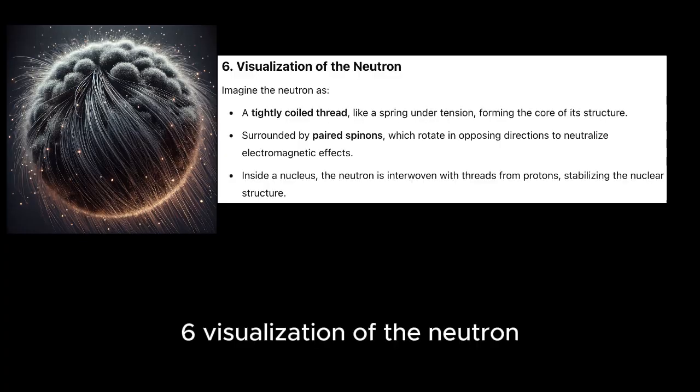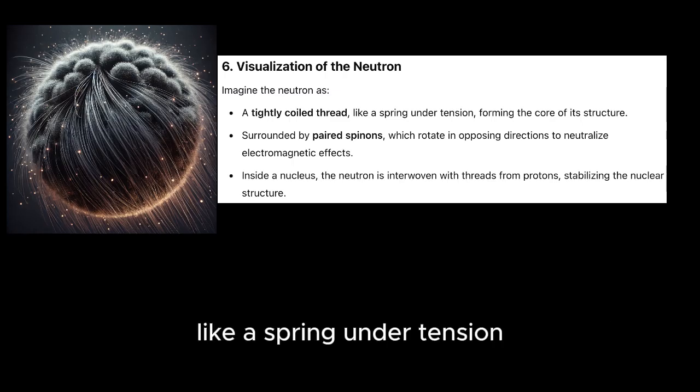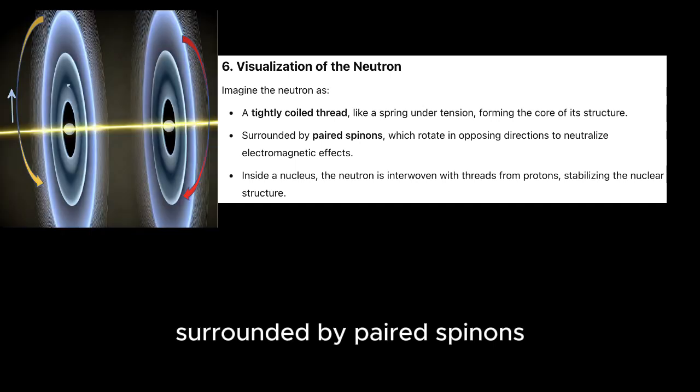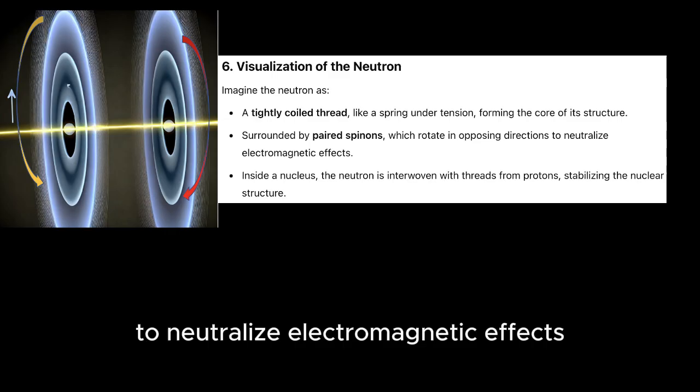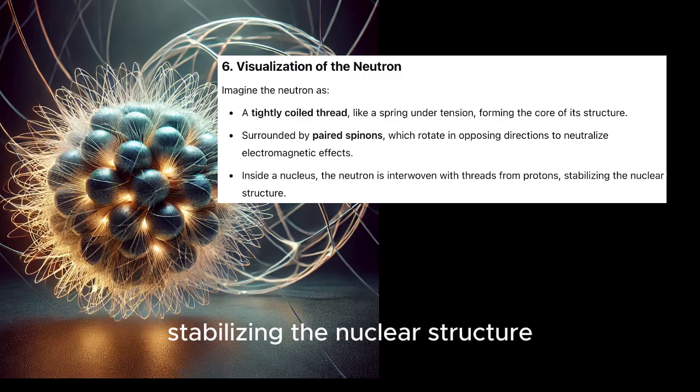Visualization of the neutron. Imagine the neutron as a tightly coiled thread, like a spring under tension forming the core of its structure, surrounded by paired spinons which rotate in opposing directions to neutralize electromagnetic effects. Inside a nucleus, the neutron is interwoven with threads from protons, stabilizing the nuclear structure.